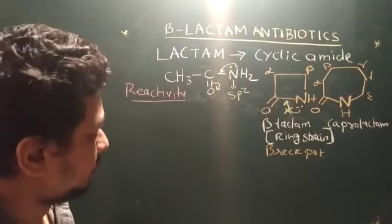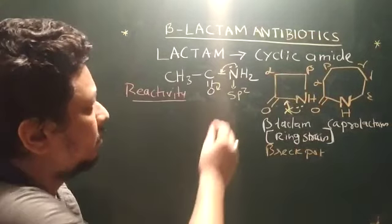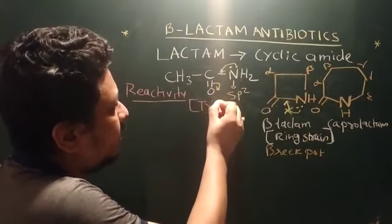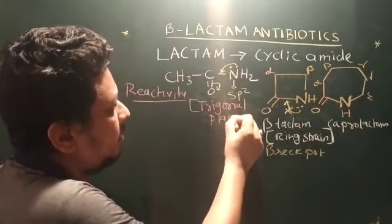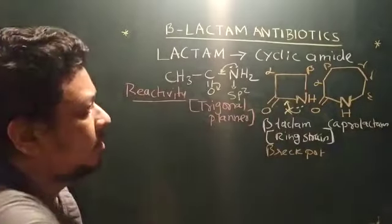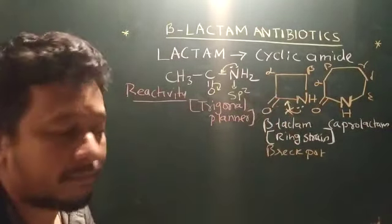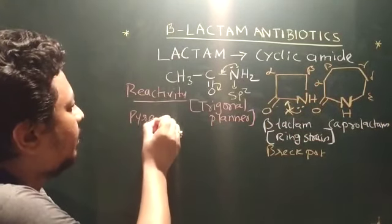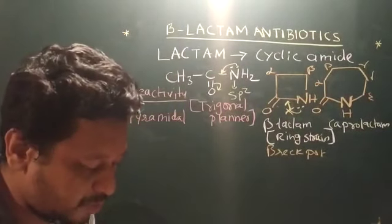in SP2 hybridized atom, the nitrogen supposed to be a trigonal planar geometry, trigonal planar geometry. But, whenever it is confined into the ring, a pyramidal geometry, a pyramidal geometry is imposed.